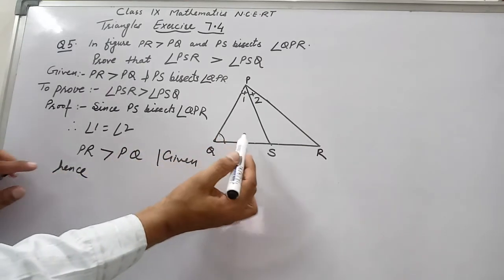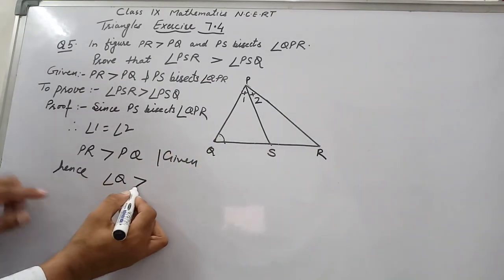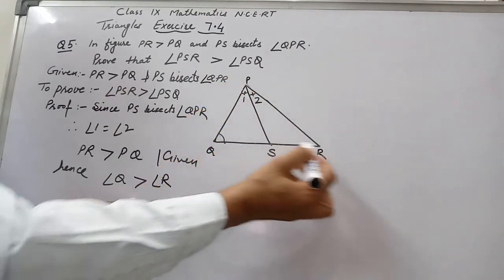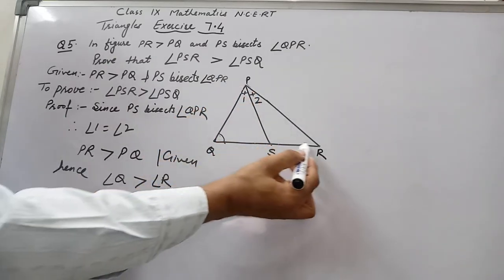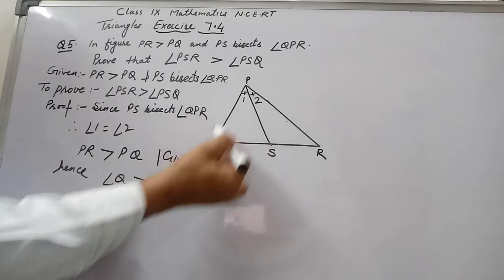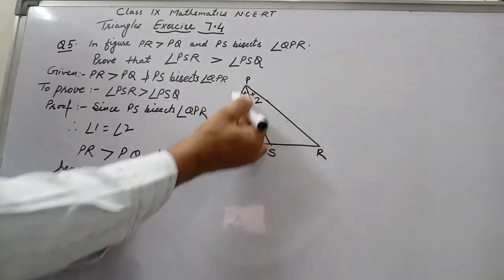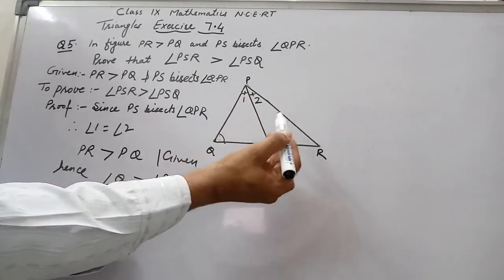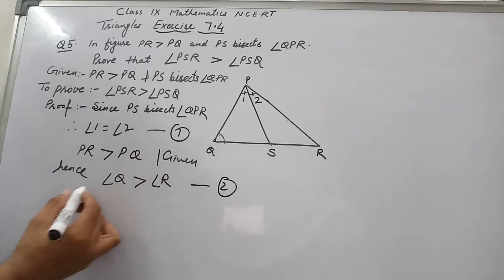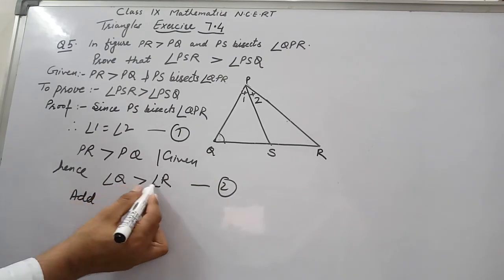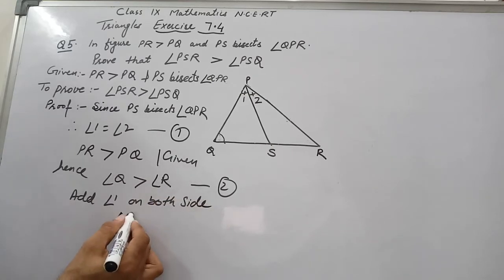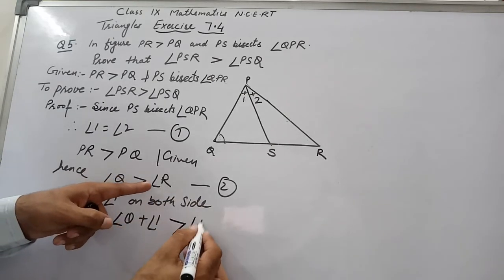So writing this: PR greater than PQ is given. Hence the angle opposite to PR, which is angle Q, is greater than the angle opposite to PQ, which is angle R. In triangle PQR, we just consider the triangle without PS. Now I will add angle 1 on both sides, so it becomes angle Q plus angle 1 is greater than angle R plus angle 1.